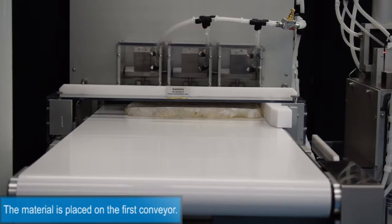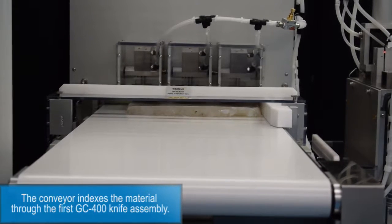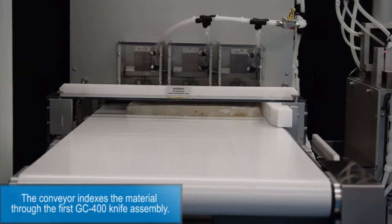The material is placed on the first conveyor. The conveyor indexes the material through the first GC400 knife assembly.